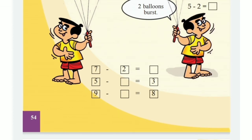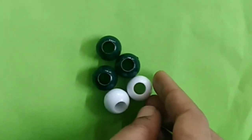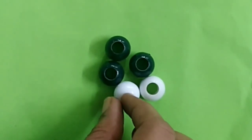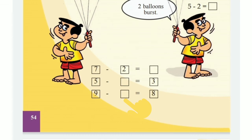We count up from 3 to 5: after 3 — 4, 5. Children, do you get the answer? Yes, that is 2. Okay, write the answer here. Then look at the next one: 9 minus dash is equal to 8. 9 minus 1 is equal to 8. So you have to write here number 1. Then we go to the next page.